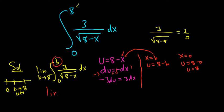So this is equal to the limit as B approaches 8 from the left. So 3DX is negative 3 DU. So I'll pull the negative out. So you have negative 3. I'll pull the negative 3 out as well. So negative 3 DU all over the square root of U.